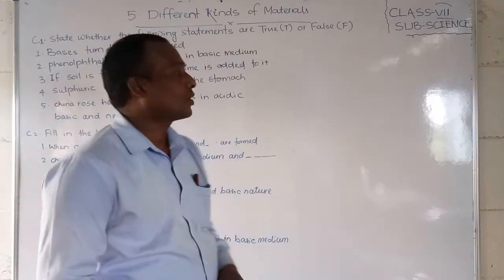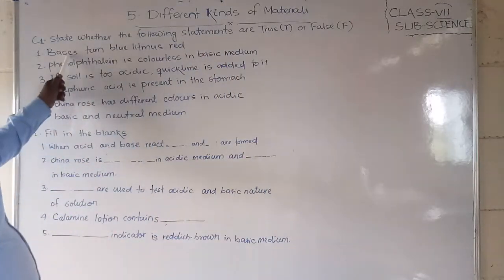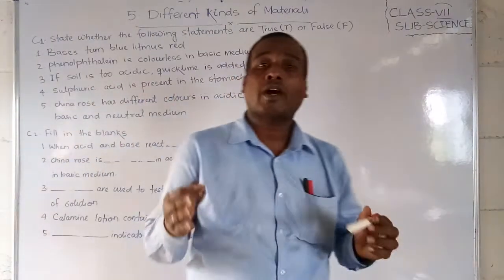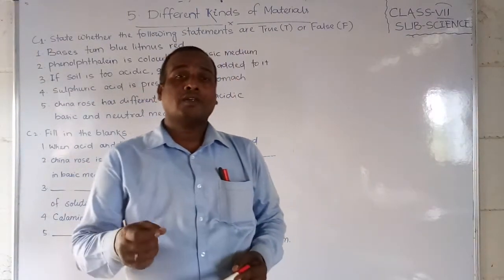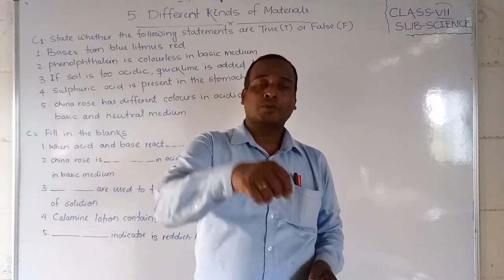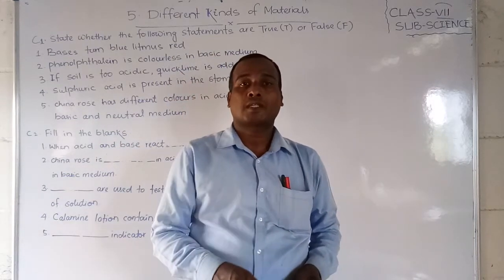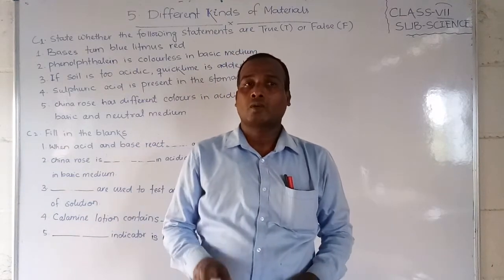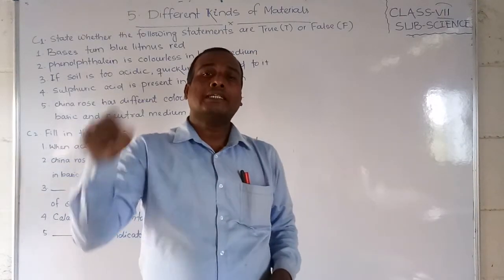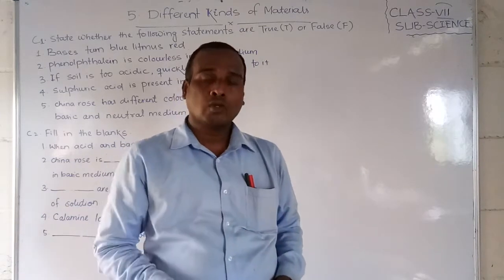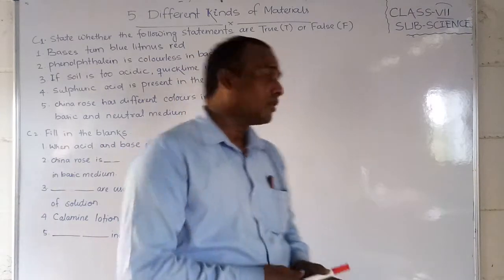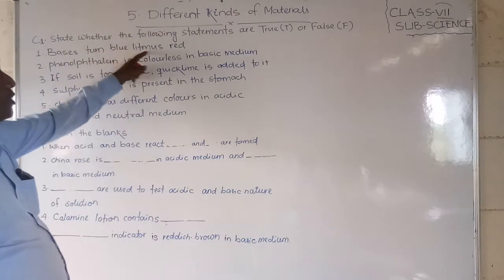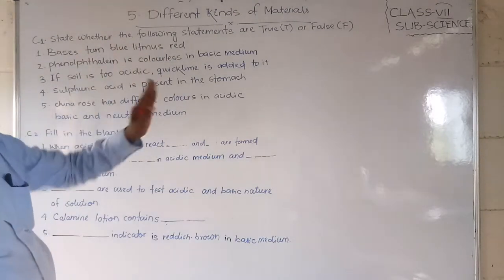First statement: Bases turn blue litmus red. Almost all of you have an idea about that. Whenever the litmus paper is put in the base, if the blue litmus is put in the base, there is no color change. If you put it in acid, then it will change to red. So bases turn blue litmus to red, but blue litmus doesn't have to change in the basic medium. So what do we write? This is false.